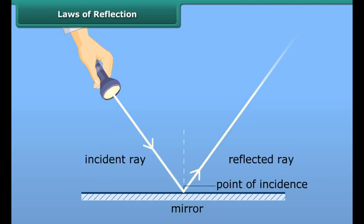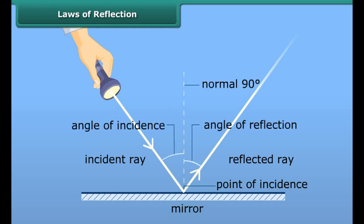Just as a ball bounces off a wall when we hit it, similarly, light bounces off objects when it strikes them. The most important fact is that the angle at which the light strikes an object is the same as the angle at which it gets reflected. Let us study about it in detail.